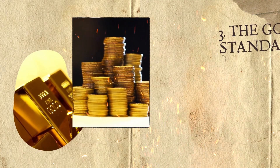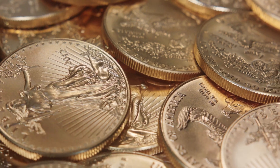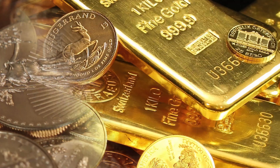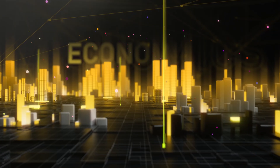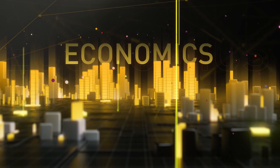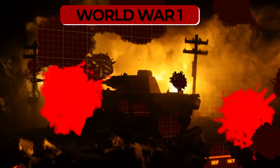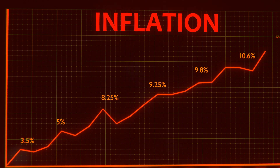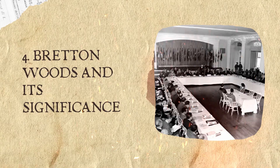Section three: the gold standard. Let's jump to the gold standard. This system pegged currencies to gold and, for a time, brought about economic stability worldwide. But it wasn't without its flaws — World War I put enormous strain on this system, leading to inflationary pressures.